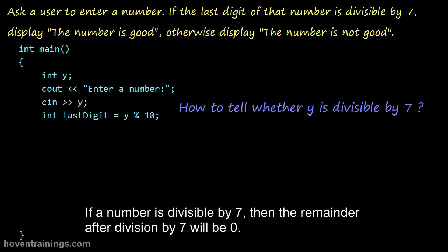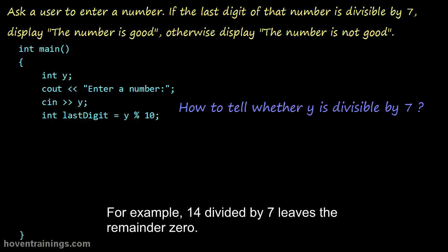If a number is divisible by 7, then the remainder after division by 7 will be 0. For example, 14 divided by 7 leaves the remainder 0.